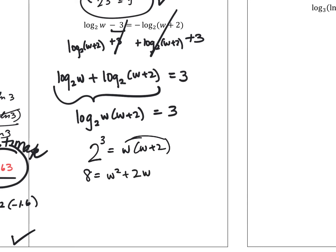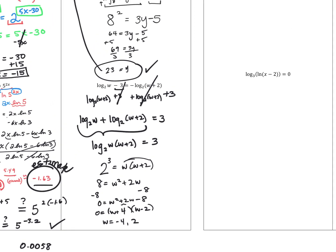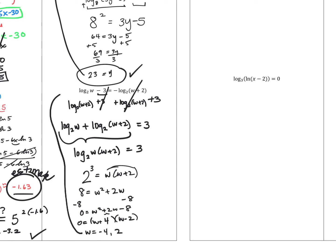We turned the log equation into a quadratic, so set it equal to 0 by subtracting 8: w squared plus 2w minus 8 equals 0. Factoring: (w plus 4)(w minus 2), giving w equals negative 4 or w equals positive 2. Going back to the original equation, log base 2 of negative 4 can't work — that's extraneous. The value w equals 2 works fine in both log terms, so w equals 2 is the solution.